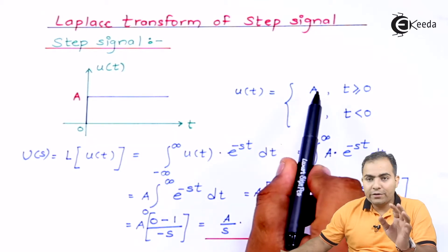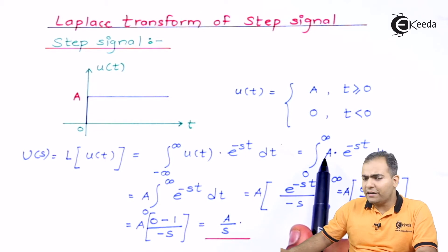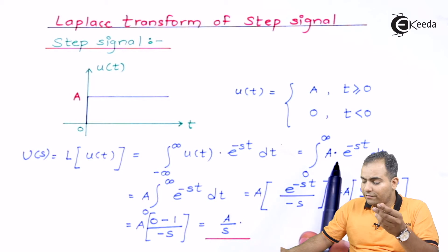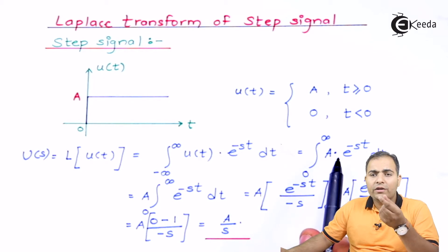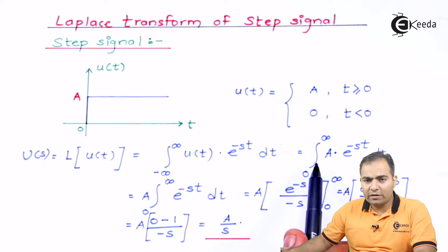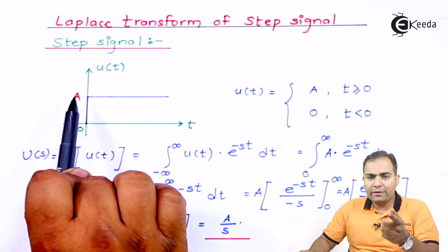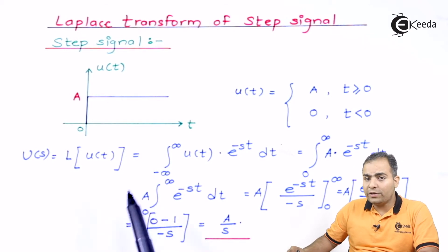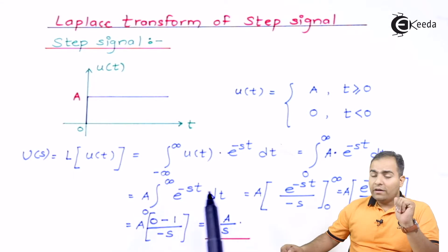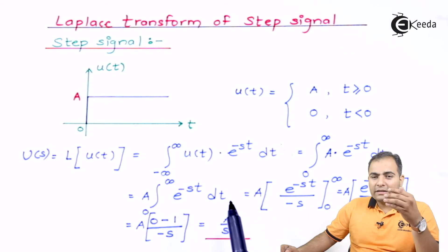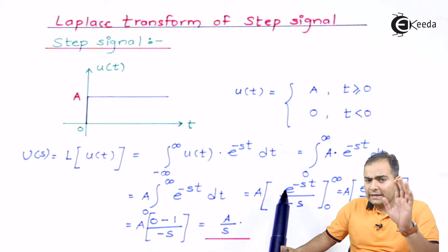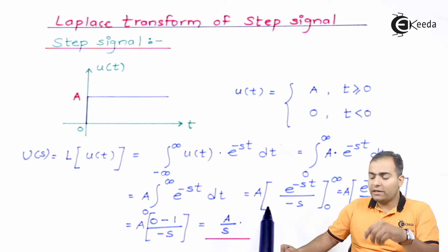In the integration, A is a constant term — the integration is only over the variable t. Terms without t come outside the integral. So A comes outside, and we integrate e to the power minus st over the range zero to infinity with respect to t. The integration of e to the power at is e to the power at divided by a. Here our constant is minus s, so we get e to the power minus st divided by minus s, and we substitute the limits.